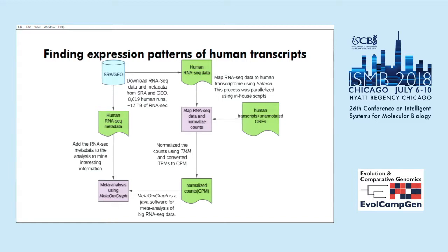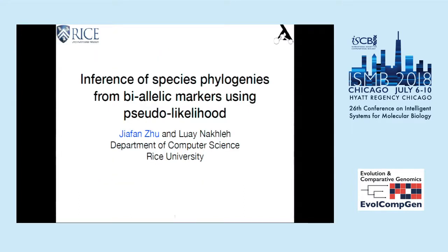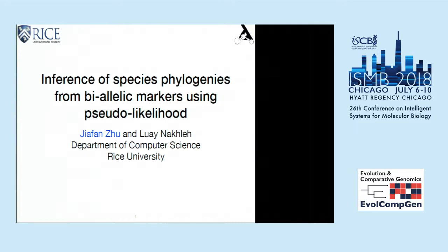An audience member asked whether the organization of orphan genes has been tested — specifically whether they are co-located, which might relate to segmental duplication. They also asked whether domain structures have been used to predict function. The presenter responded that duplication and rapid divergence are possible mechanisms and that they could discuss further. Regarding domain structures, the presenter noted they have not yet examined these, as the structures may not be conserved, but acknowledged it is a worthwhile approach since domain functions are already curated.